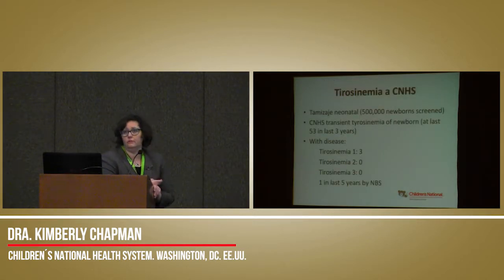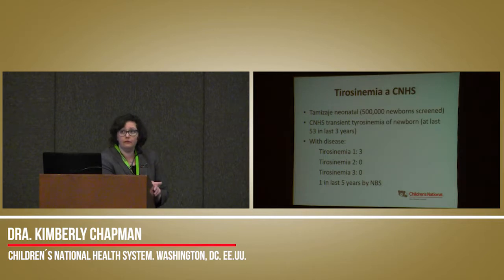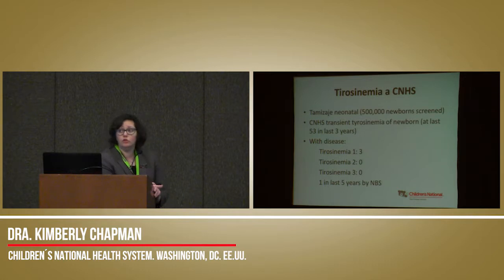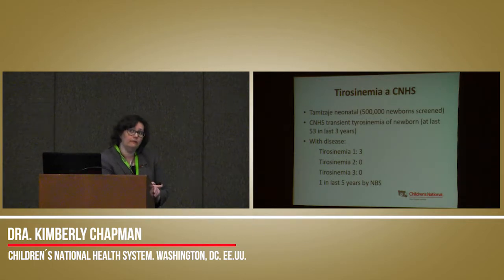At Children's National, we are the follow-up site for Maryland, Virginia, and the District of Columbia — approximately 500,000 newborns screened in the last five years. We're more likely to see transient tyrosinemia in the newborn than classical tyrosinemia type 1, or types 2 and 3. Currently we have only three patients with type 1: two picked up on newborn screen, one from family history. Transient tyrosinemia occurs because the neonate's liver is not mature enough for metabolic enzymes to function fully, leading to elevated tyrosine. It's the most common false positive we see in our newborn screens.